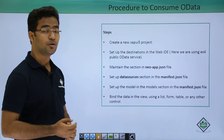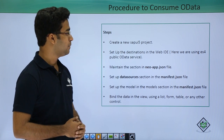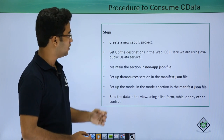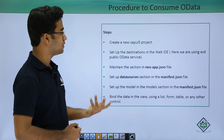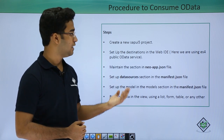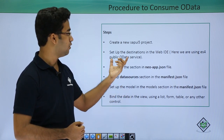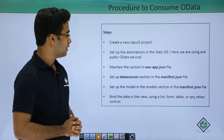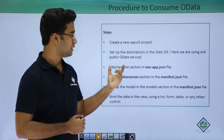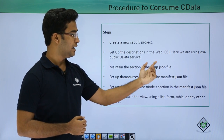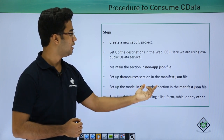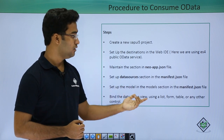Let us move on to the next slide — how to consume OData service. Here I have provided the example, and in the video coming just afterwards I will explain all these steps in detail. First we will create a new UI5 project where we will set up the Web ID destinations as done in the previous session. Here we will be using the ES4 public OData service. We have to mention the section in the neo.app.json file and set up the data sources in the manifest.json file.